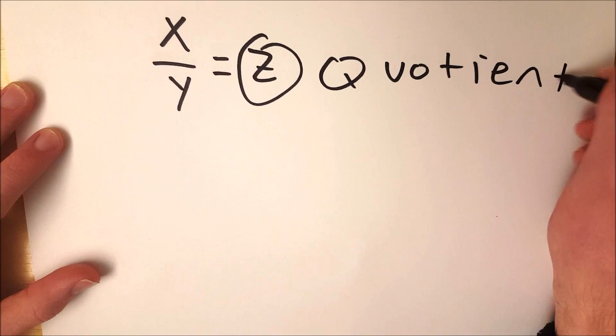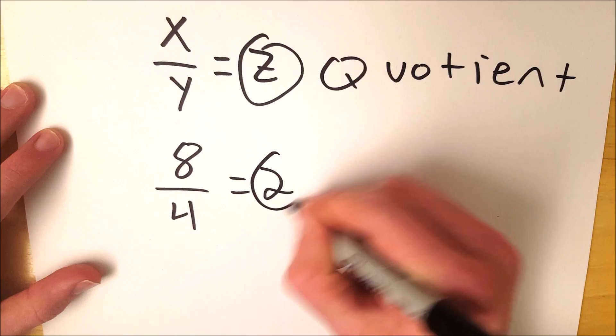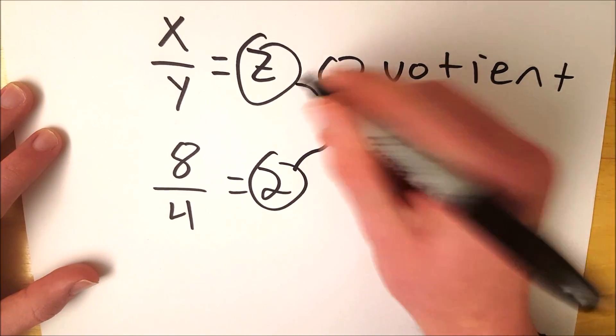And that's how you spell it. If we divide 8 by 4, and that equals 2, 2 is the quotient.